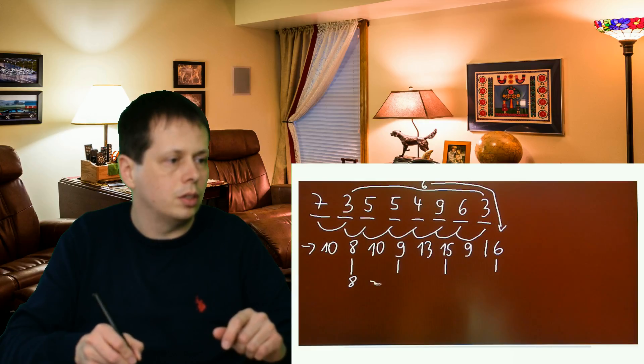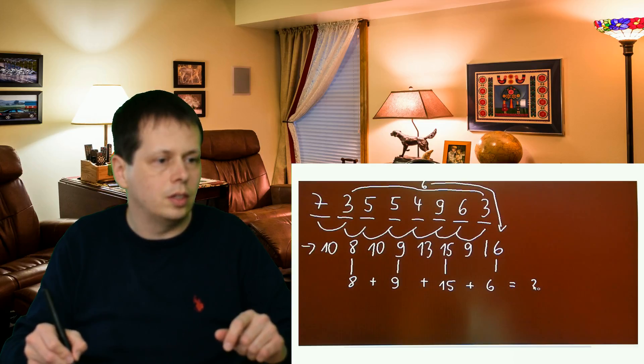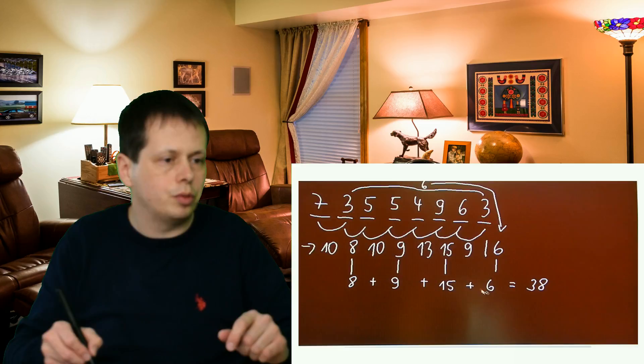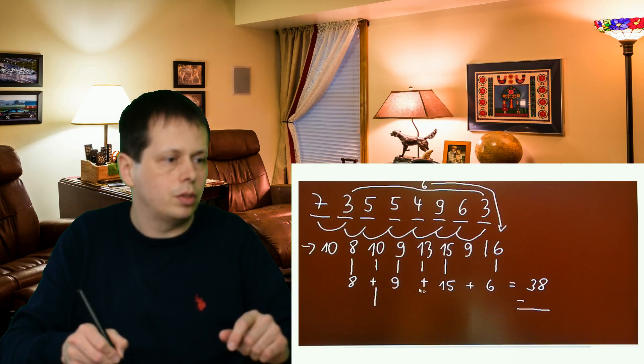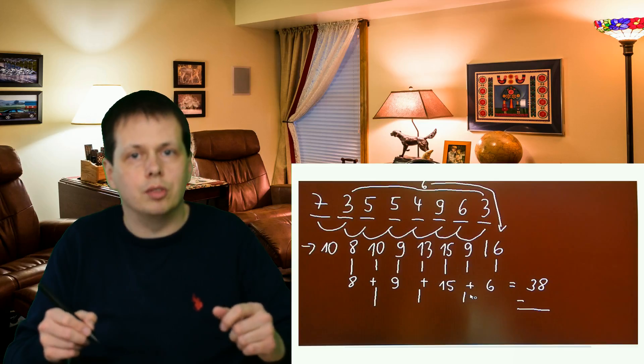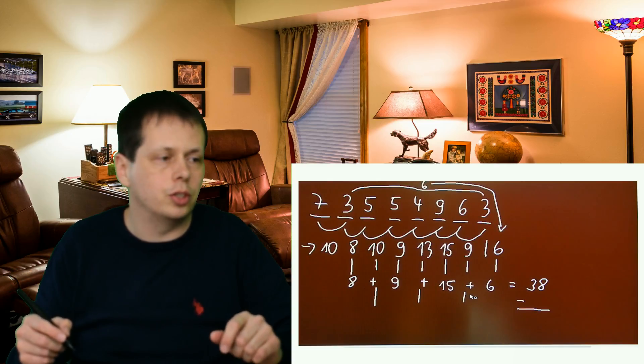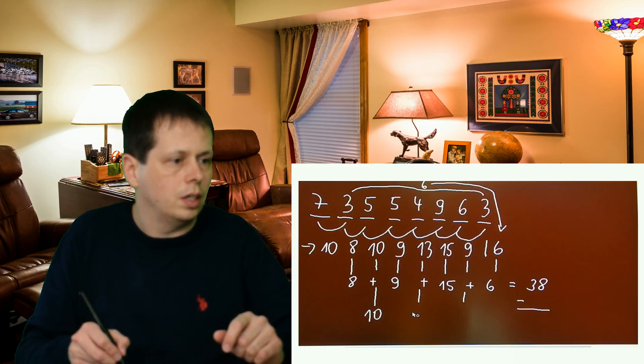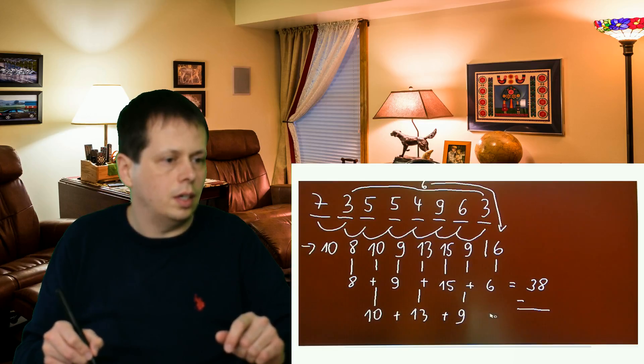You have to sum 8 plus 9 plus 15 plus 6, and this is 38. Now we have to subtract the third, the fifth, and the seventh. So we have the 10, the 13, and the 9, and this is 32.